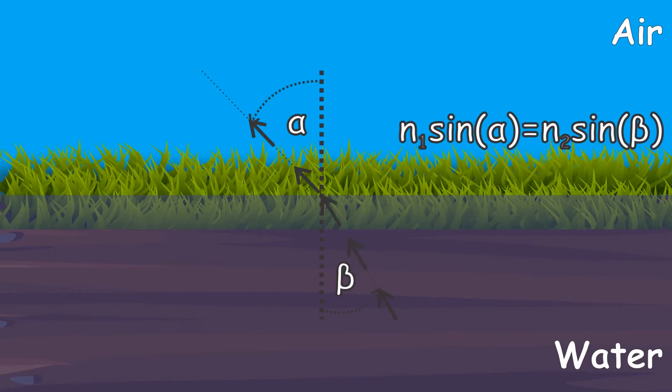When light passes from an optically denser material to an optically less dense material like from water to air it breaks under a bigger angle.